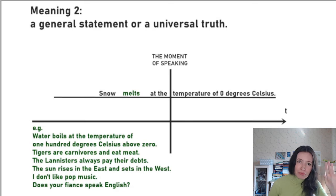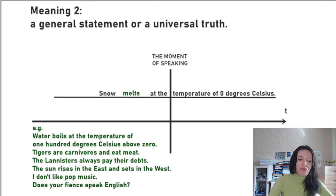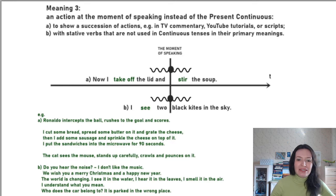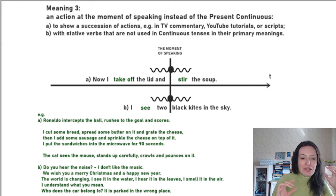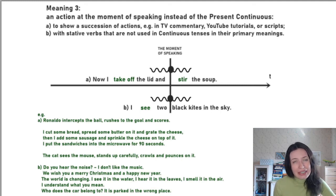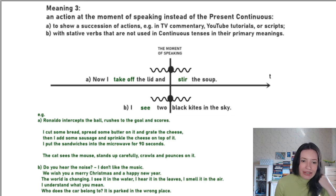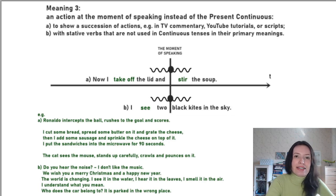Now we move on to the complicated syntagmatic meanings that have special cases — you need extra conditions to use them. Meaning three is when the present indefinite goes into the territory of the present continuous. The present continuous normally means something going on right now, in the moment of speaking. But there are cases where you can't or don't have to use the present continuous, and then the present indefinite picks up that function. The first such case is a succession of actions.